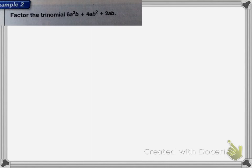First, we find the greatest common factor for the three terms. Often we can do that visually. Notice that each term has 2 as a factor, a as a factor, and b as a factor. So the greatest common factor is going to be 2ab.